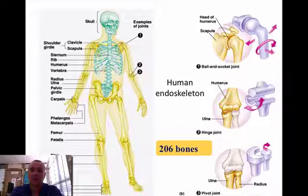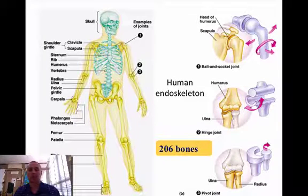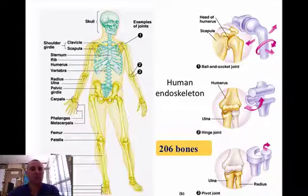There are different types of joints. There's a ball and socket joint, like in our shoulder. There is a hinge joint, like in our elbow. There's a pivot joint, like in our neck. So we have different types of joints.